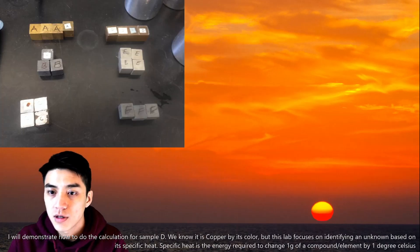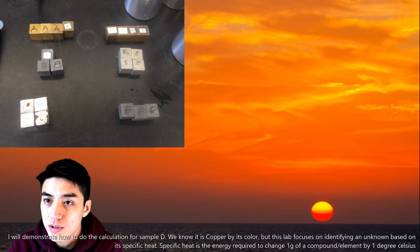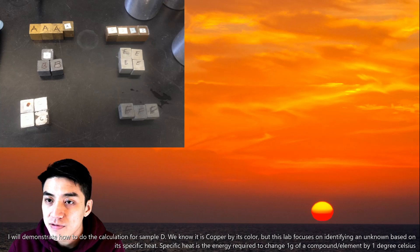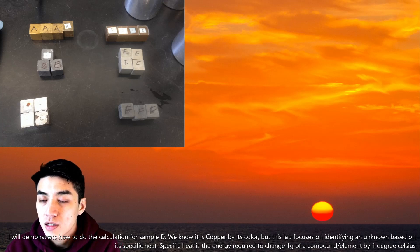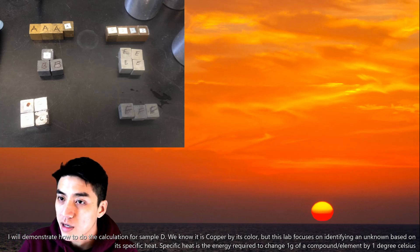Right above me are the six metal samples that we are going to identify. They are labeled A, B, C, D, E, and F. I'm going to do sample D and we are going to solve for its specific heat. And you're going to see that D looks like copper because it is.